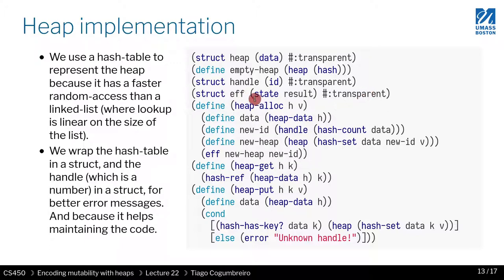Eff we've already seen is just this data structure that is basically a pair. It has a field for the state, updated state, and it has a field for the result of the operation. What you'll see later is that we actually use this eff data structure in multiple contexts, not just for this part but also for monads, which we'll cover in the future.